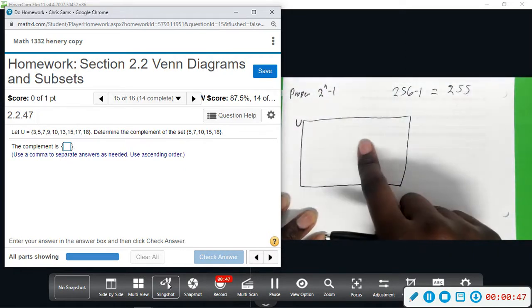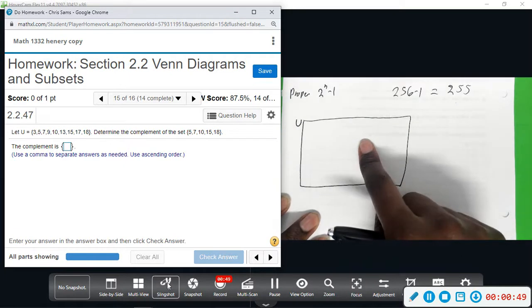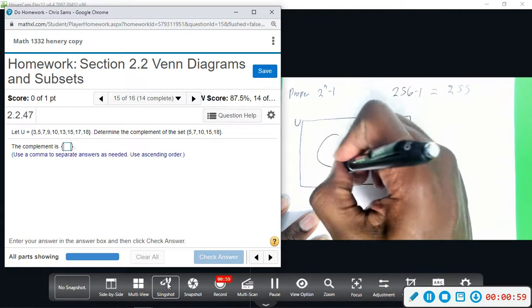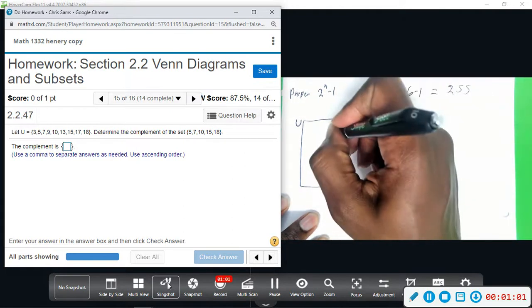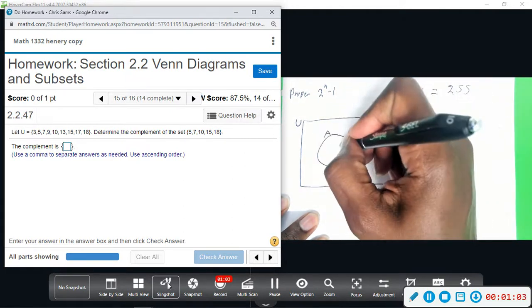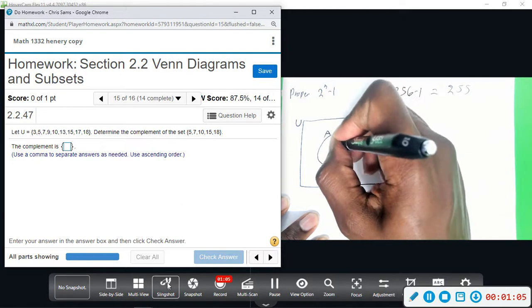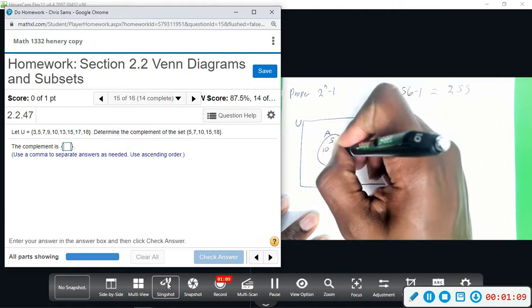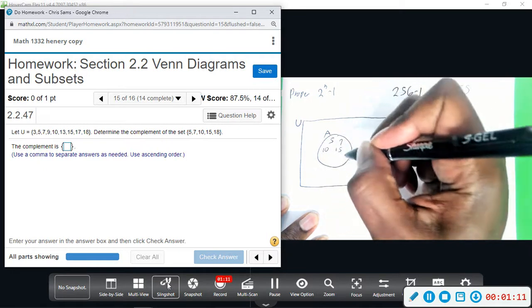So this is our universal set, and we're going to determine the complement of the set 5, 7, 10, 15, 18. I'm going to make this set, I'm just going to call it set A. So set A right here, and I'm going to put those numbers in here: 5, 7, 10, 15, and 18.